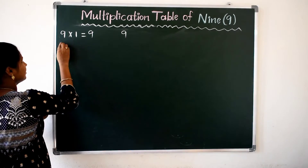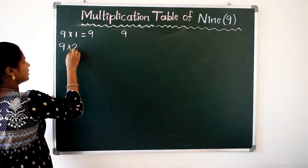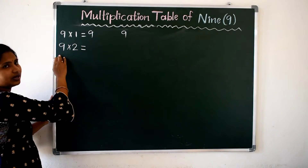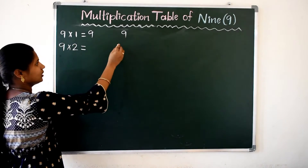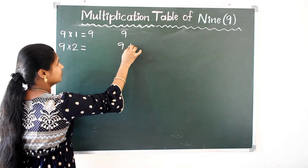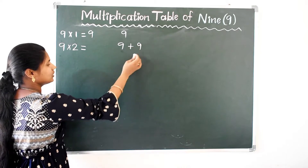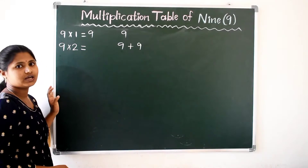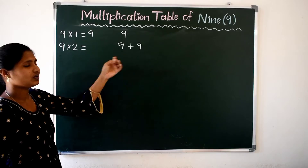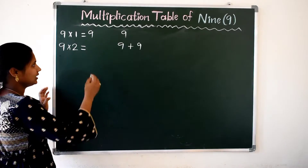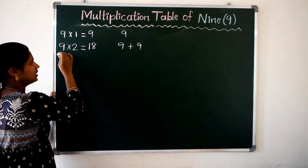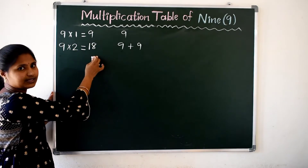Ok, 9 2's are — 9 2 times now. 9 plus 9, so 9 2 times are 18. 9 plus 9 will give us 18. Ok, so 9 2 times are 18.